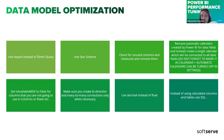Always check whether bidirectional and many-to-many connections are definitely necessary. If they are not, you can rewrite your measures to avoid them. Bidirectional connections are normally only required for filtering data — if you use something in filters, it might be fine to keep bidirectional, but if not, it can usually be replaced with different measures.